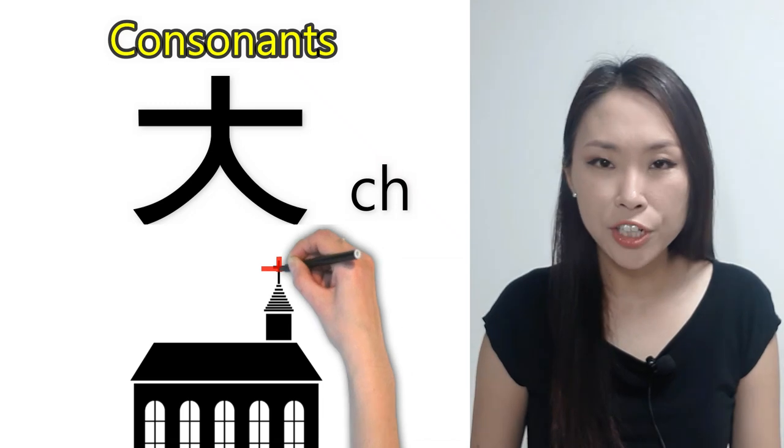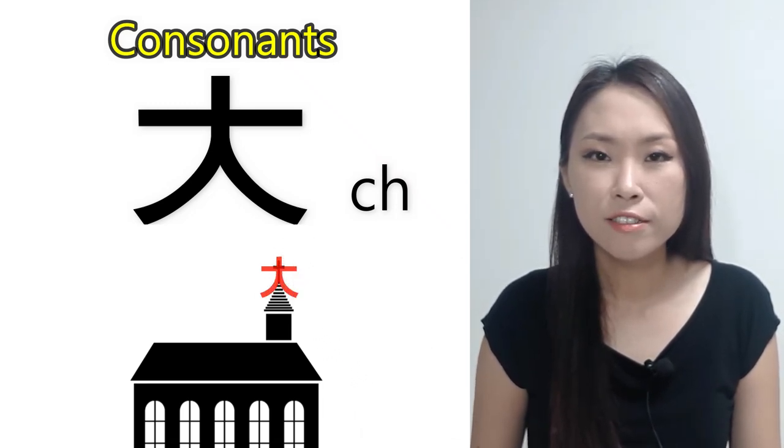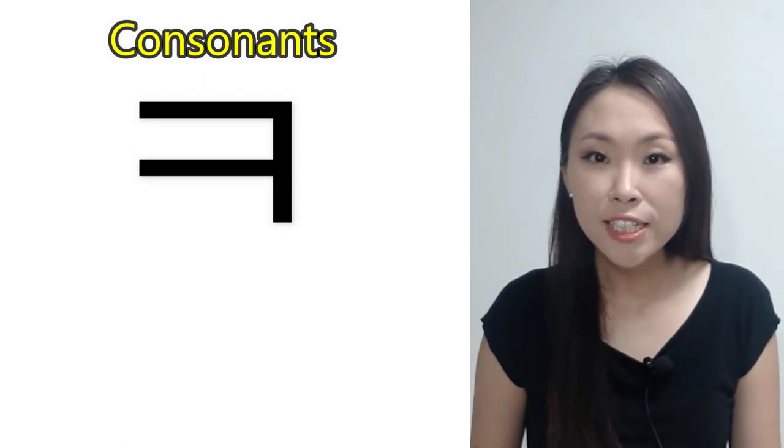The shape of the church looks like 치읓, 츠, 츠, 츠.